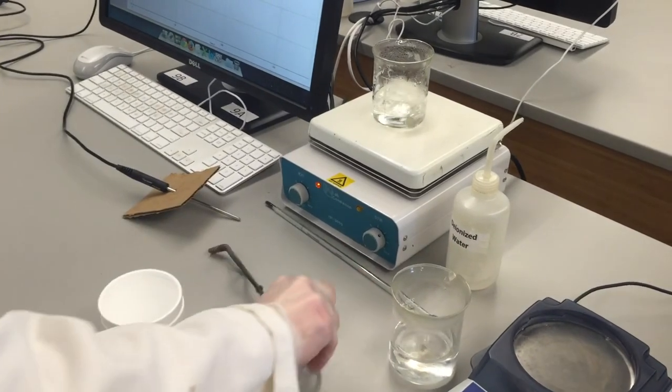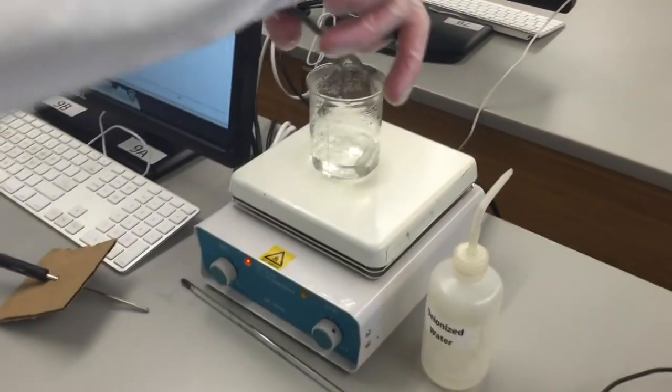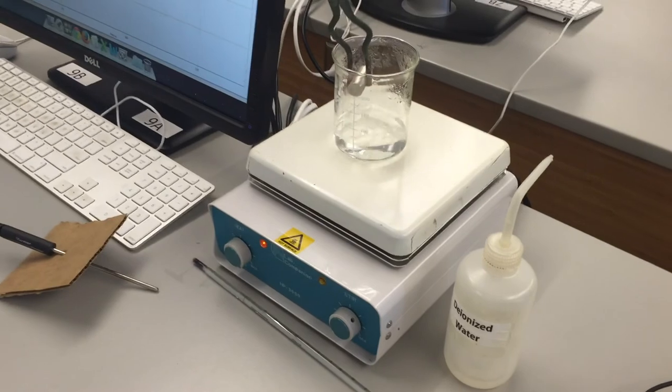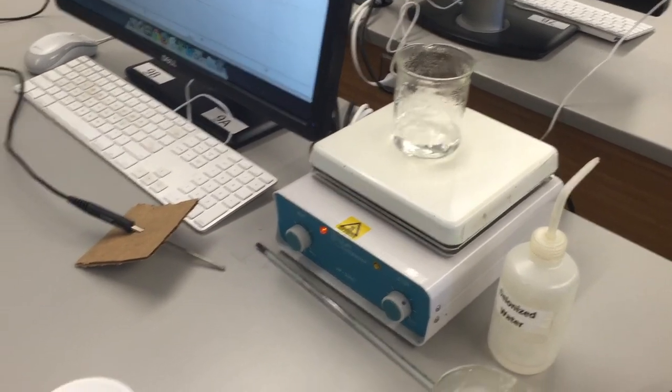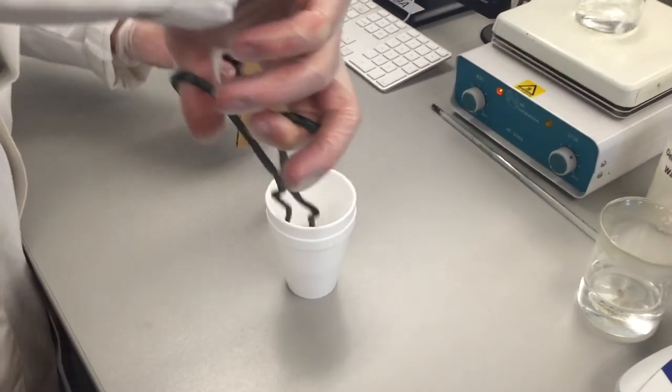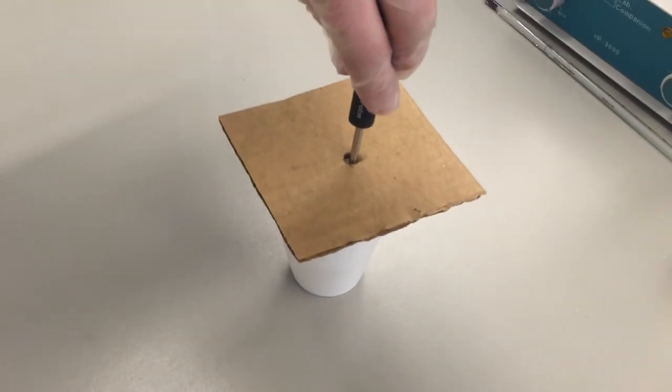Next, use your forceps to grab the metal from the boiling water and transfer it to the calorimeter. Cap the system and slide your probe through the cap into the system.